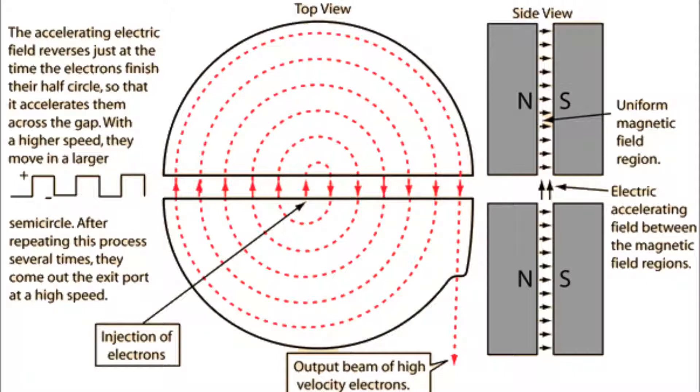The voltage reverses again and keeps accelerating the particle, therefore the radius constantly increases. When the particle reaches the end, it is traveling at its maximum speed.